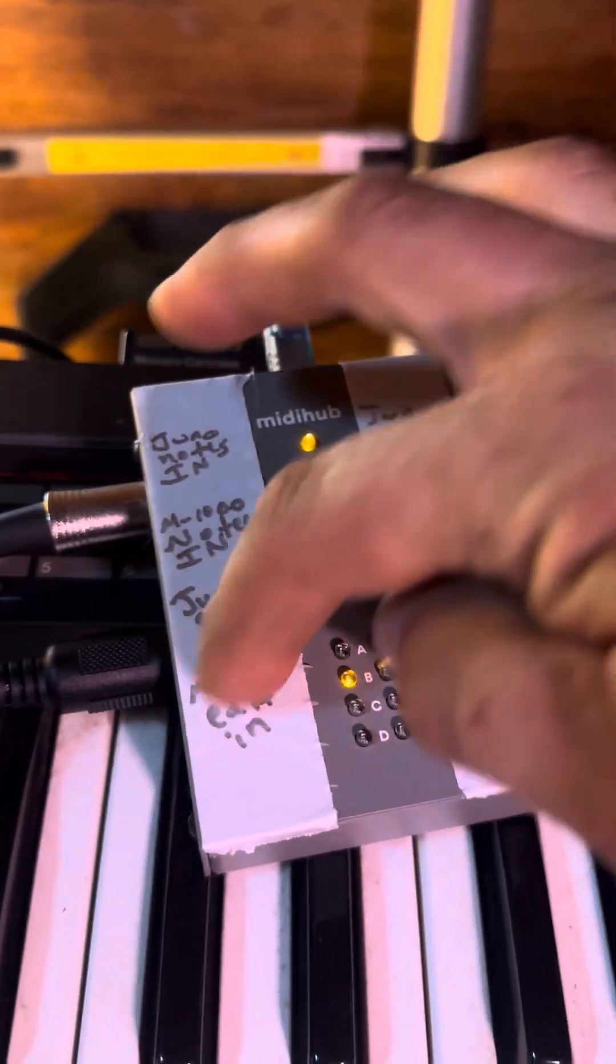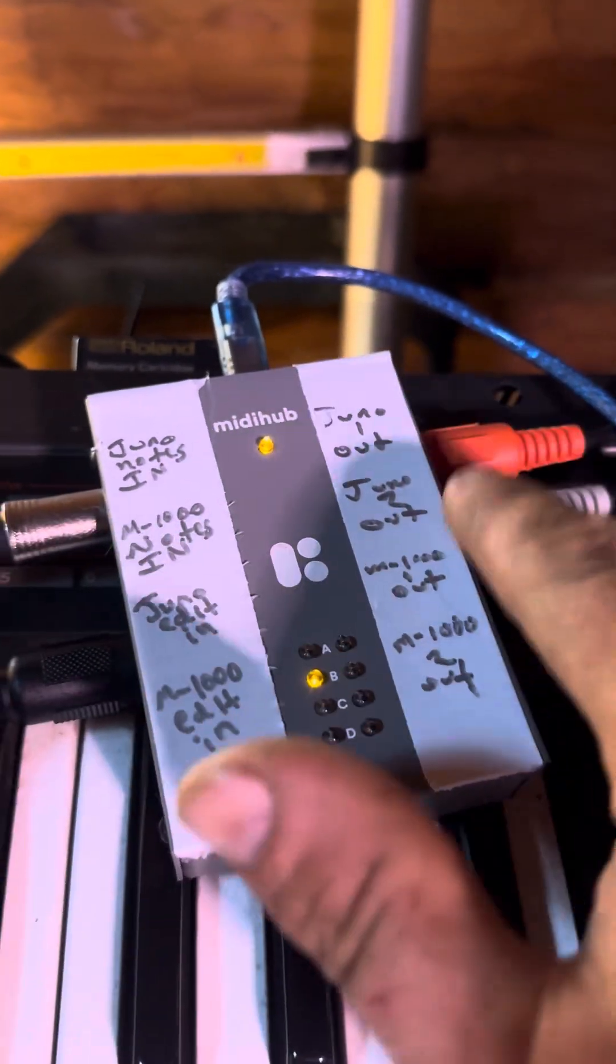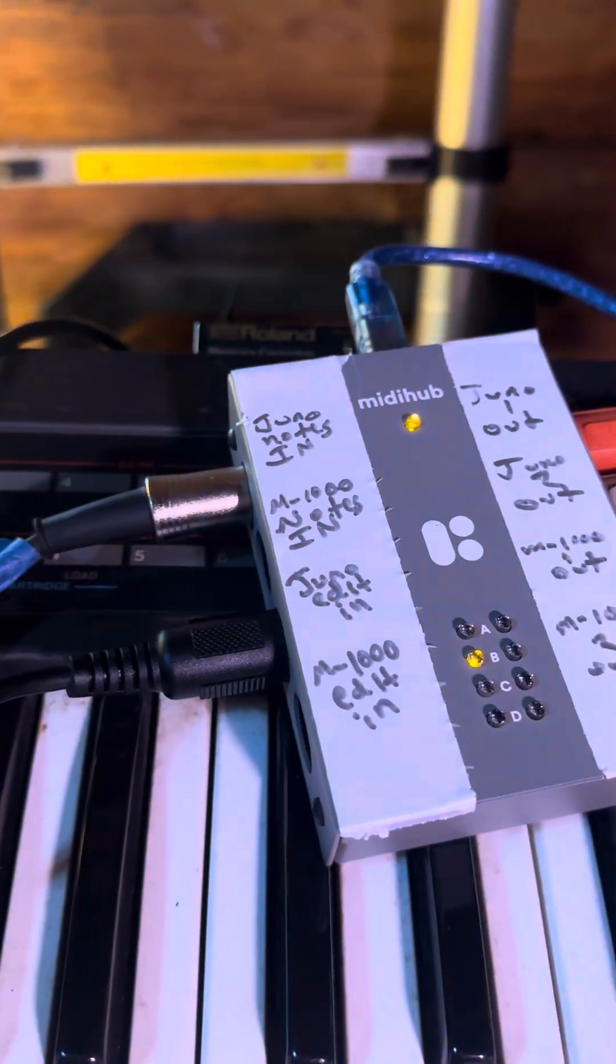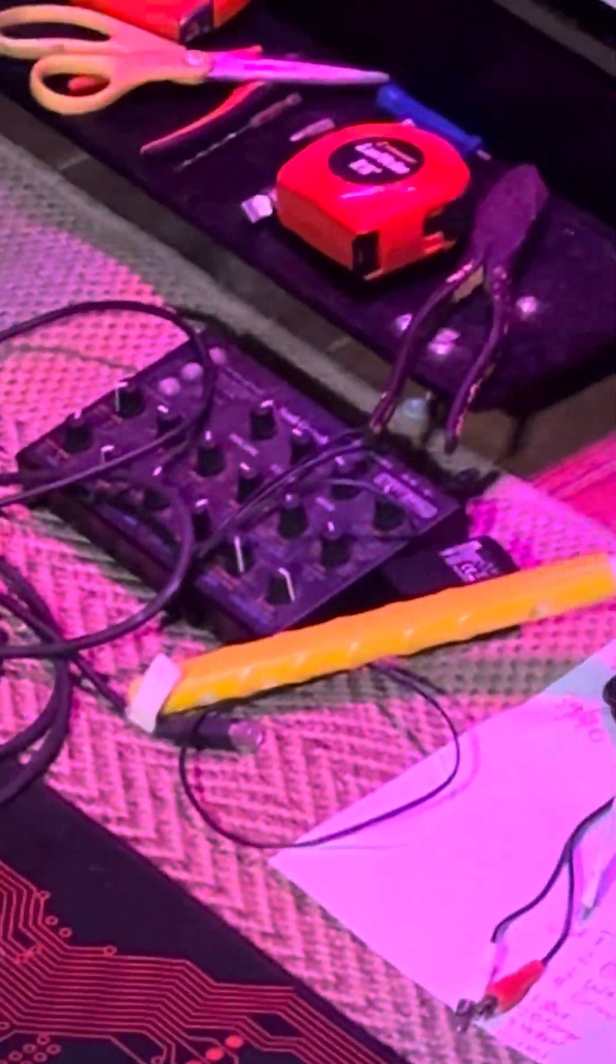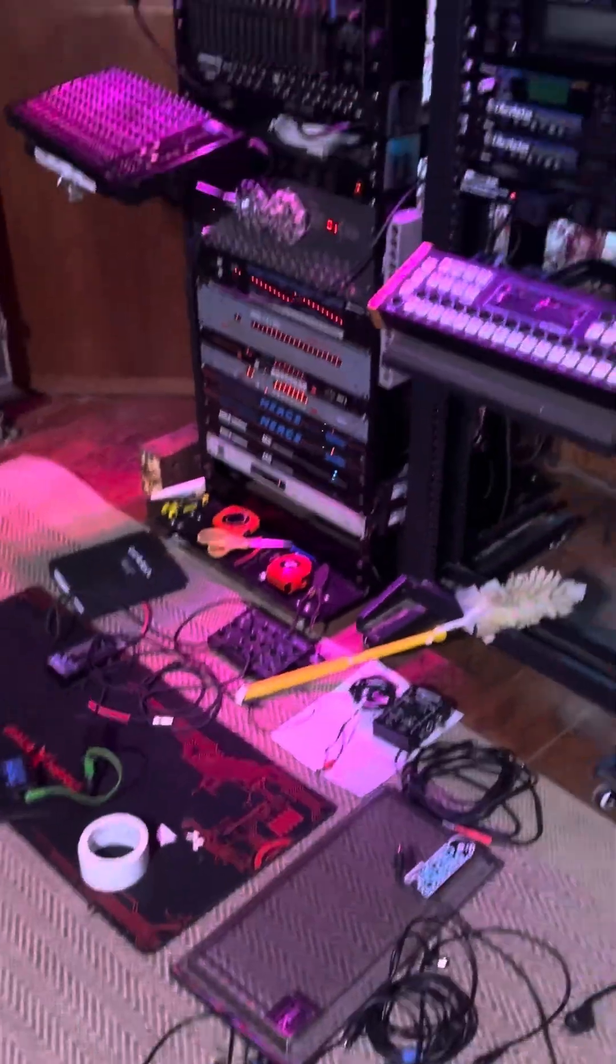So notes, SysEx, 1 and 2, or A and B. I can do the same thing with my Matrix 1000 editor, the stereo opening box, and my two Matrix 1000s there.